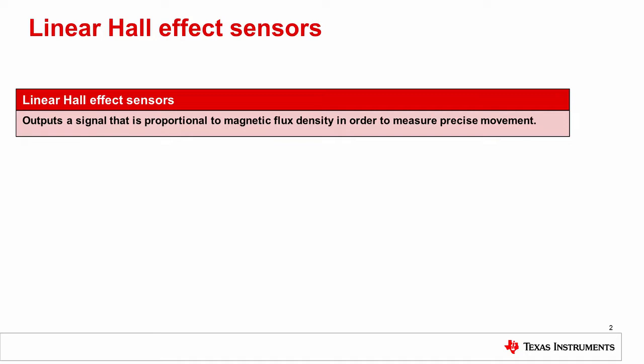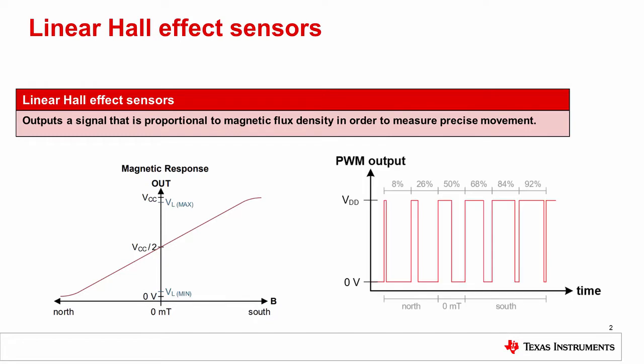TI offers two kinds of linear Hall Effect Sensors: linear voltage output type and PWM output type with varying duty cycle. In this video, I'm going to discuss some key specifications of these linear Hall Effect Sensors.